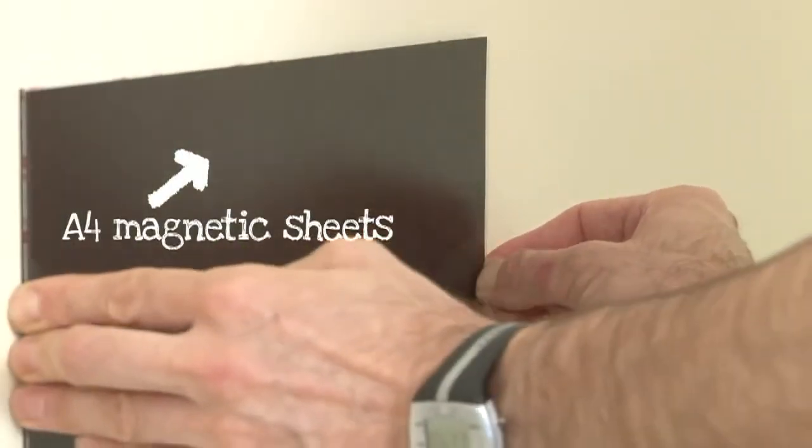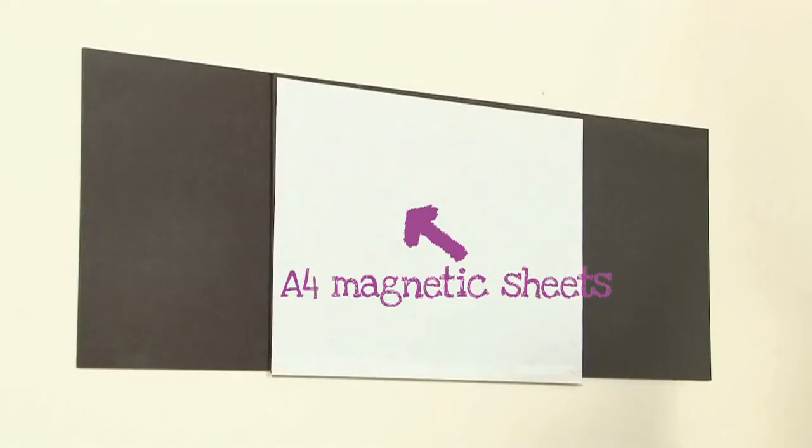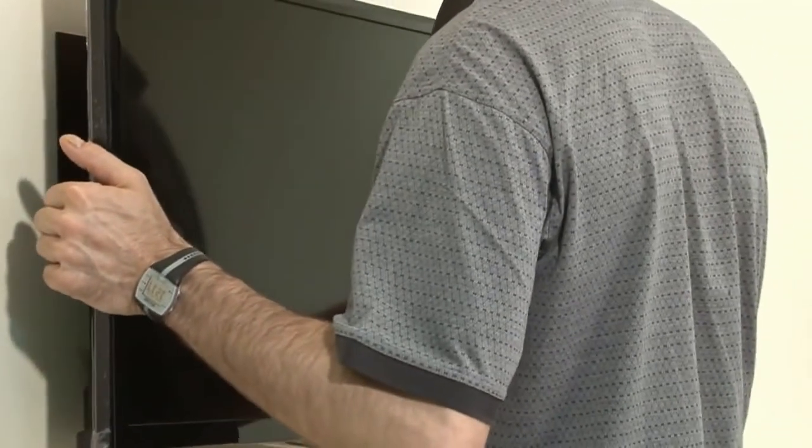And to stop it sliding down the wall, we made a thin block out of A4 magnetic sheets which the telly would sit on. So this was it, the moment of truth. And bingo, it worked. Amazing!